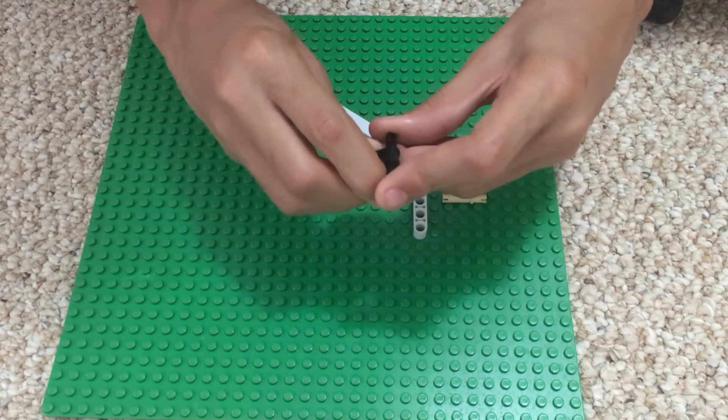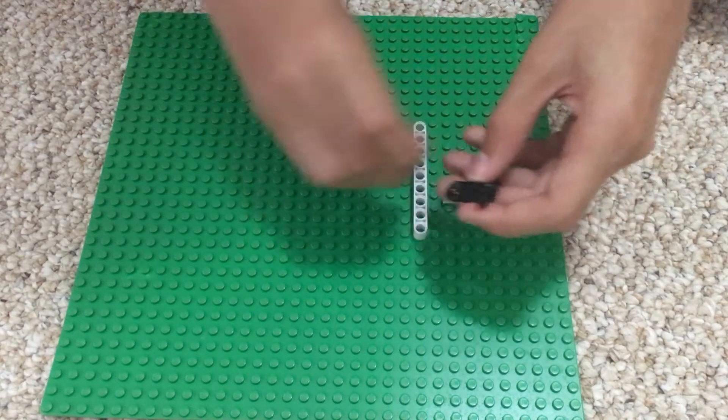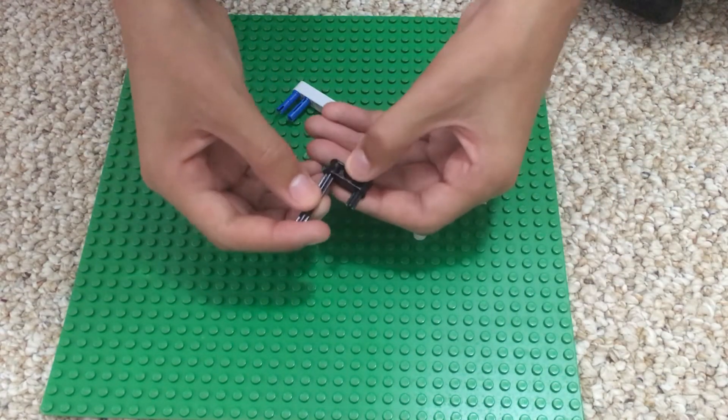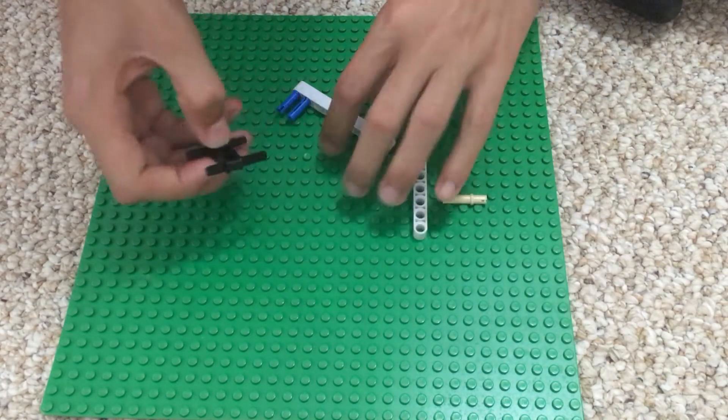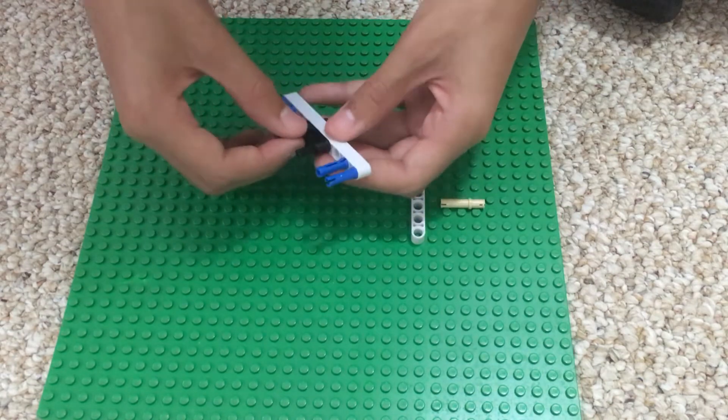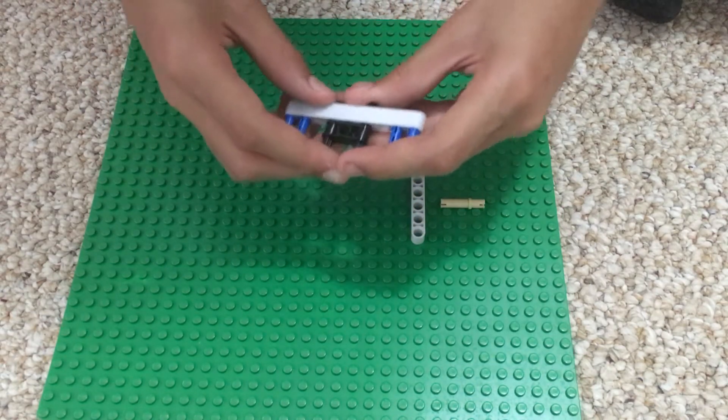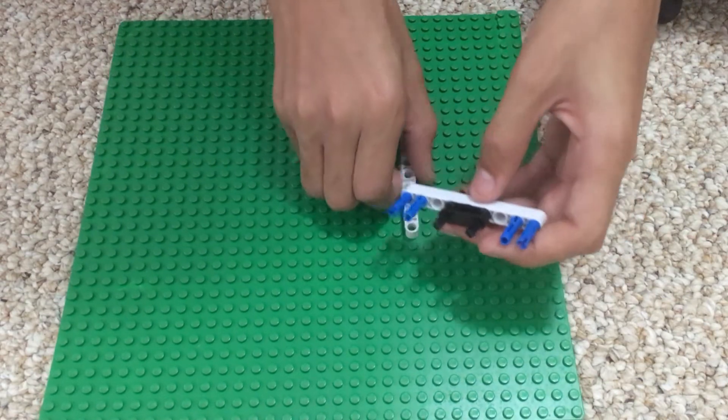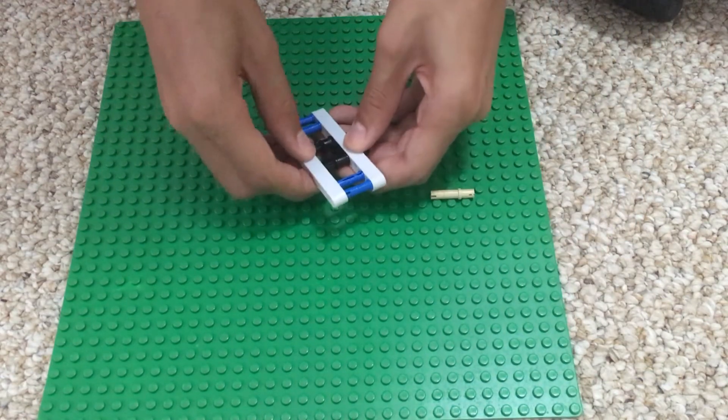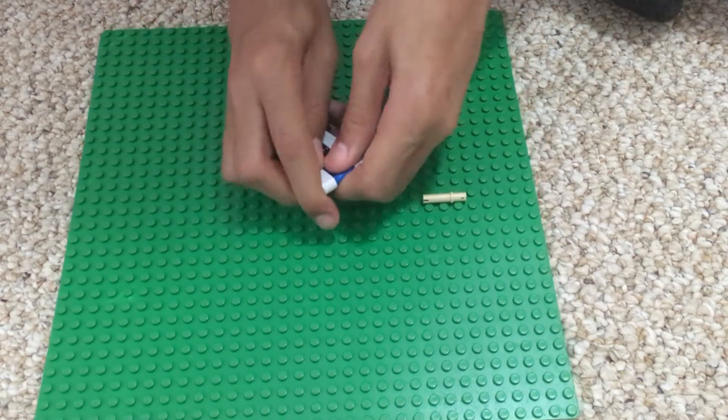Then you'll put it on the thing we just made, kind of make it even a little bit. Then you're gonna take this other piece and put it right back on top of this.